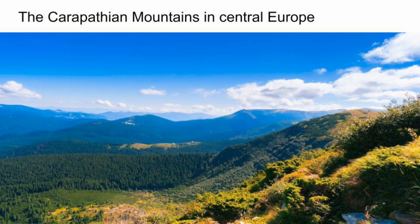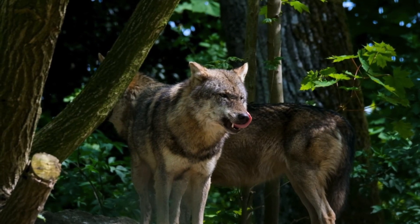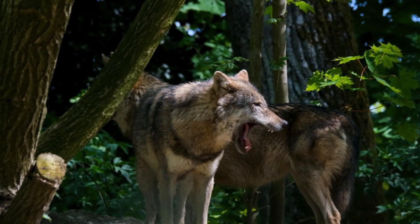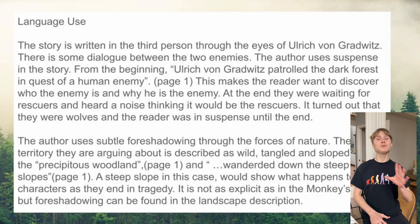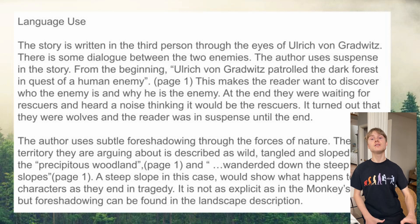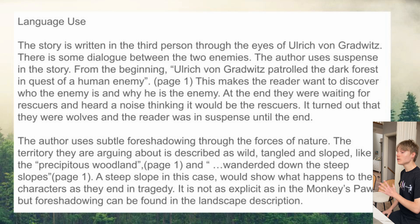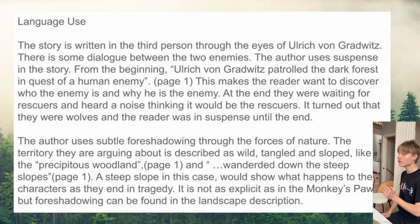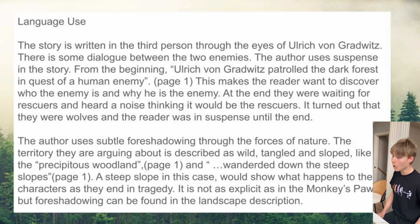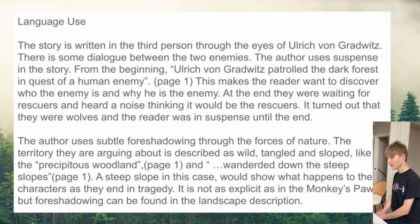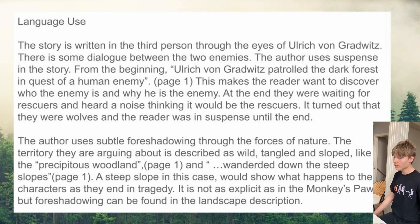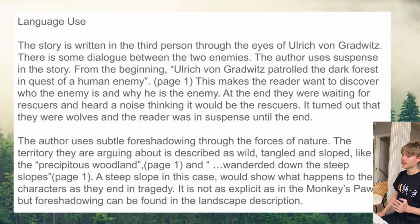The story, however, takes another turn. The men see something approaching, which they think are rescuers. But instead, it turns out to be wolves. The reader can imply that the men died after this, and their dispute had a deadly consequence. The story is written in the third person through the eyes of Ulrich von Gradwitz, and there is some dialogue between the two enemies. The author uses suspense throughout: from the beginning, 'Ulrich von Gradwitz patrolled the dark forest in quest of a human enemy.' Page 1. This makes the reader want to discover who the enemy is and why. At the end, they were waiting for rescuers and heard a noise, thinking they would be rescuers — but it turned out to be wolves, keeping the reader in suspense right to the end.